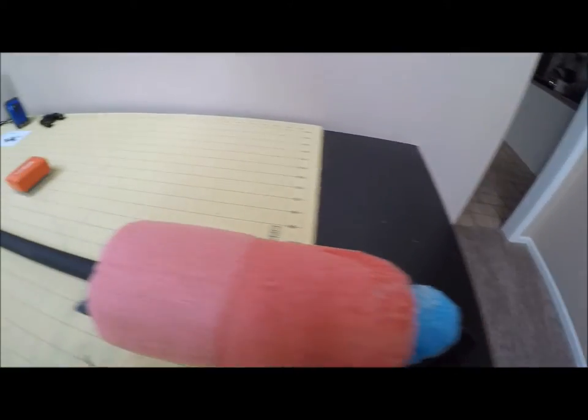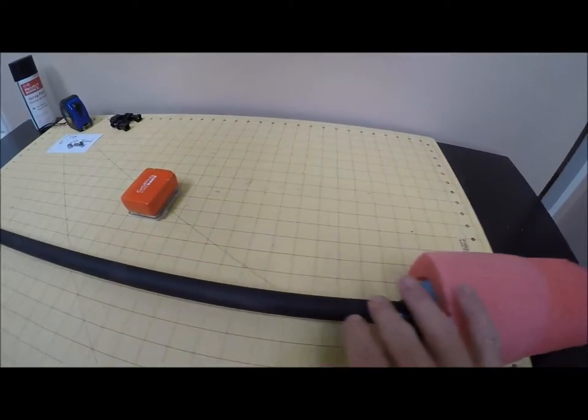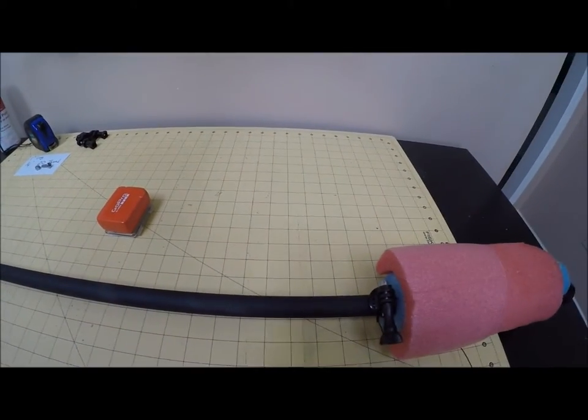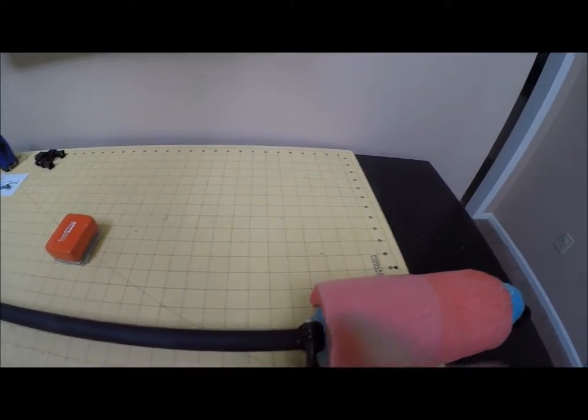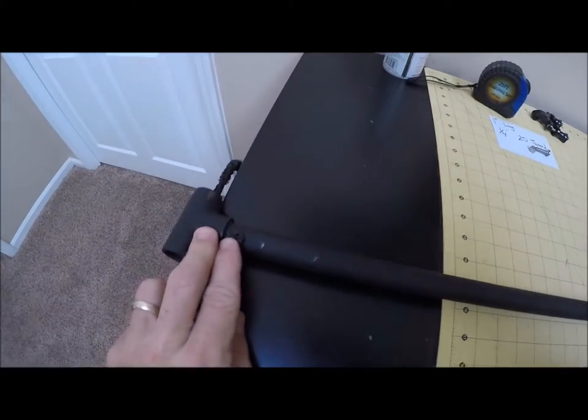And the rope, that's it. The PVC length is 50 inches. This bolt is 10 inches from the end. And on this end, this bolt is 2 inches from the end.